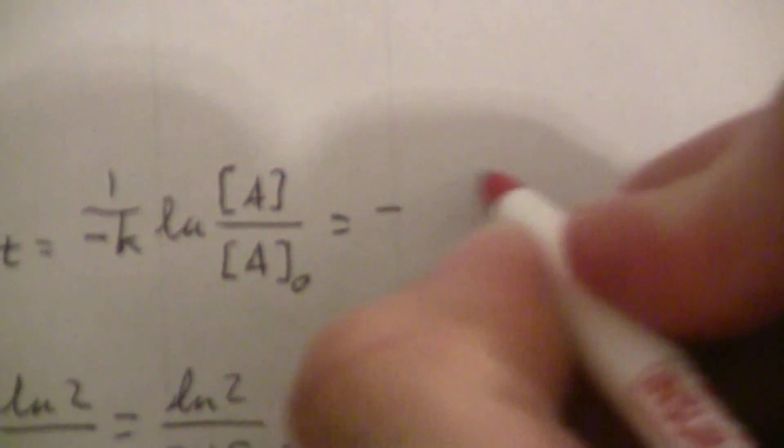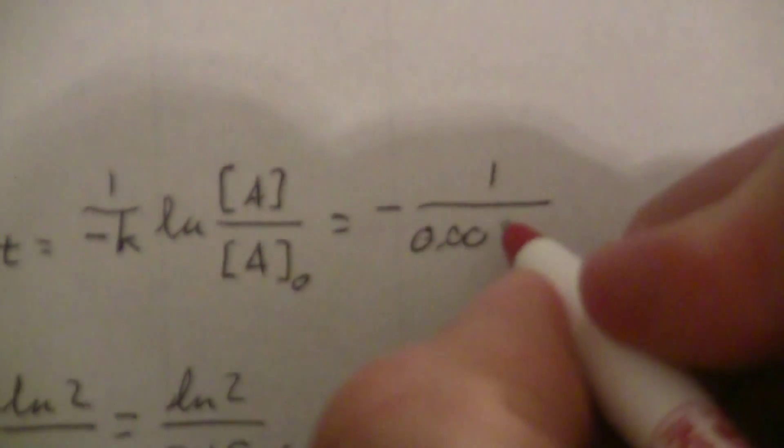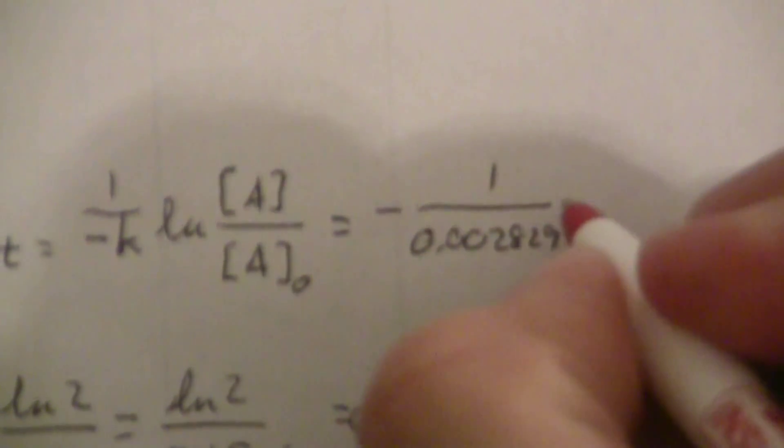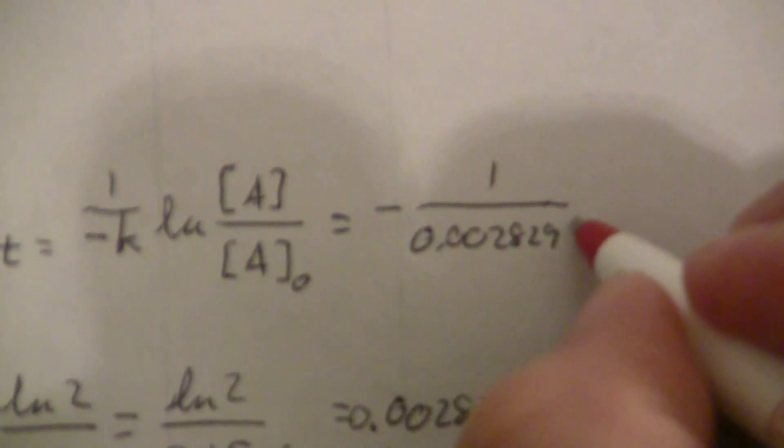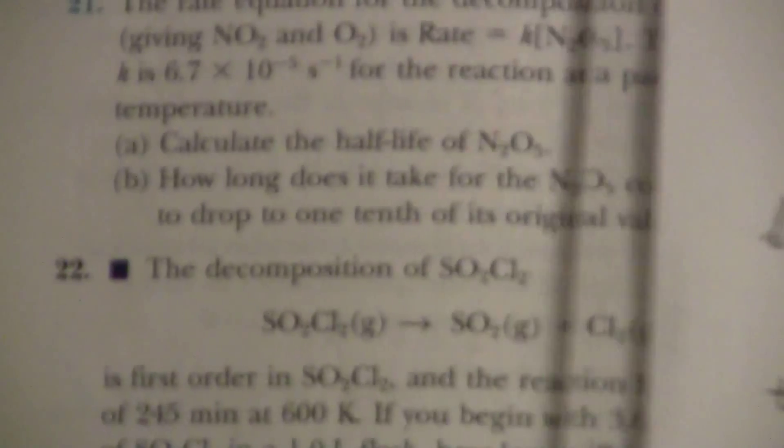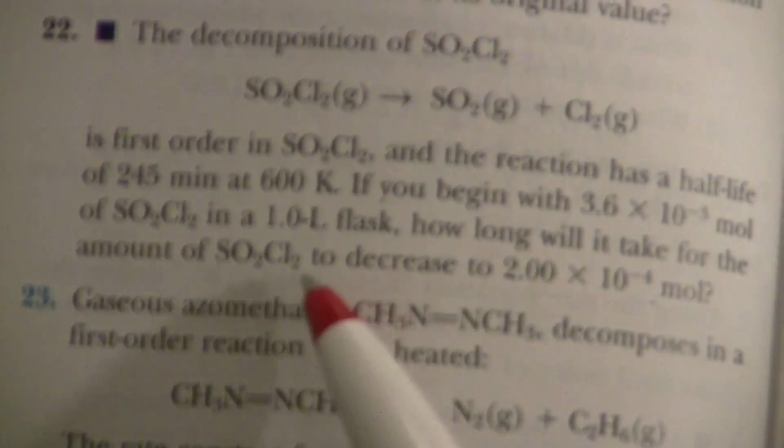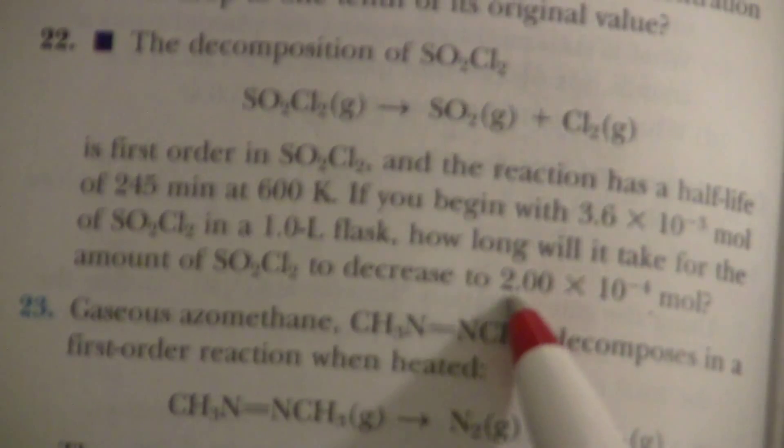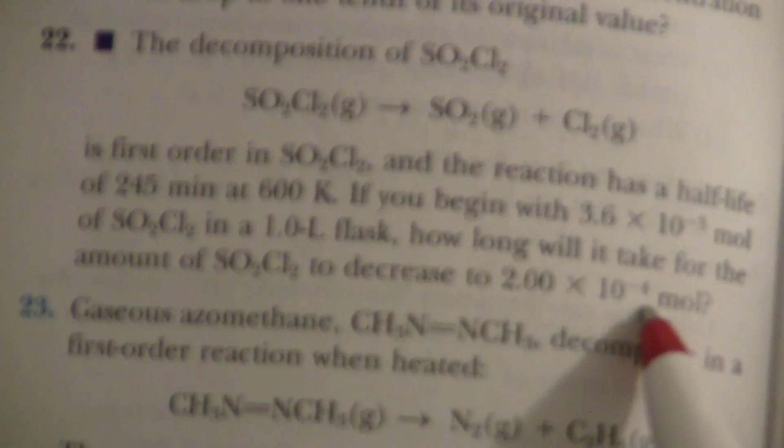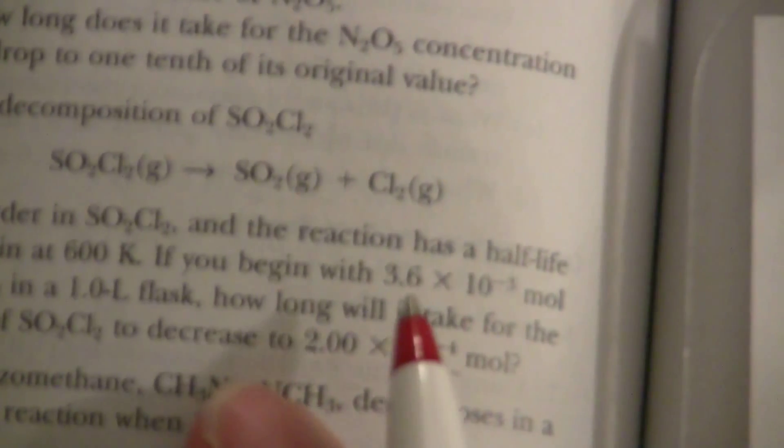I'll have negative 1 over 0.002829 times the natural log of my final concentration of SO2Cl2. I want to know how long it takes to decrease to 2.0 times 10 to the minus 4th moles in that same liter flask, and I'm starting at 3.6 times 10 to the minus 3 moles per liter.